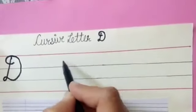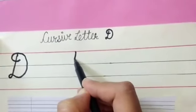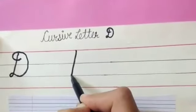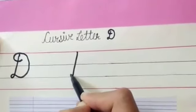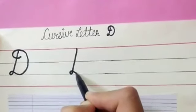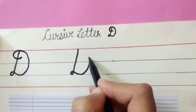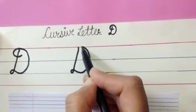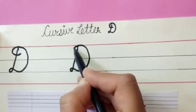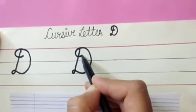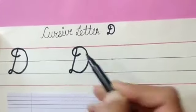Once more. Go down. Loop it behind. Then move up. Then end with a little curve.